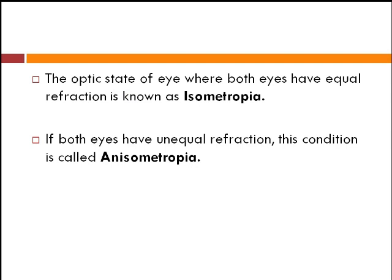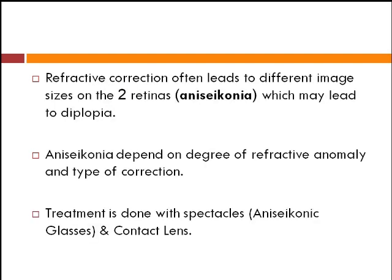If the refractive state of both eyes is equal, it is known as isometropia. But if the eyes have unequal refraction and there is a difference of refractive error in both eyes, it is called anisometropia. The refractive correction often leads to different image sizes on the two retinas, which is known as aniseikonia. This usually occurs when the refractive error is quite high or the difference between the refractive errors of the two eyes is large. Treatment is done with spectacles or contact lenses.